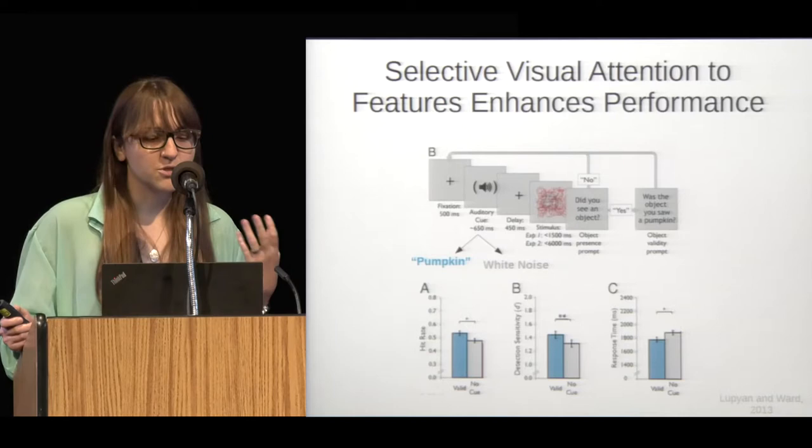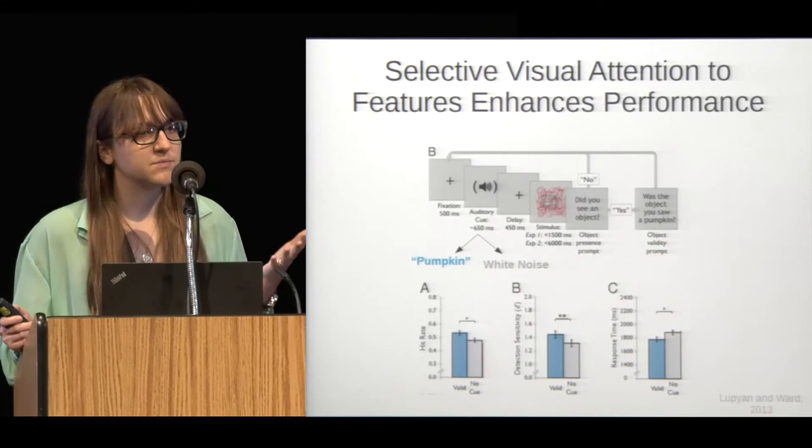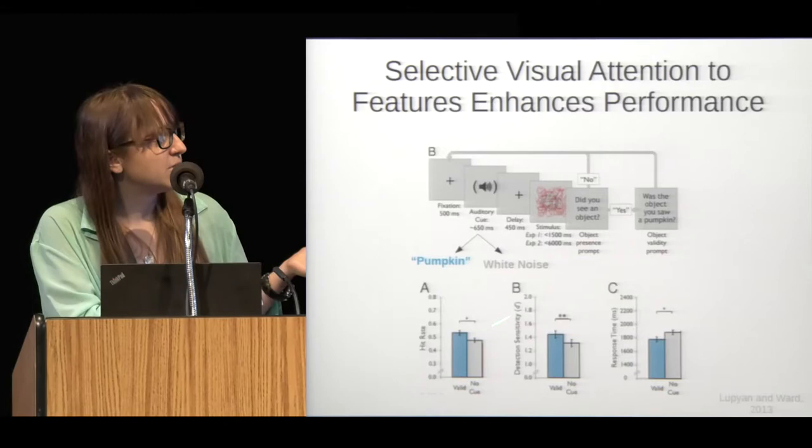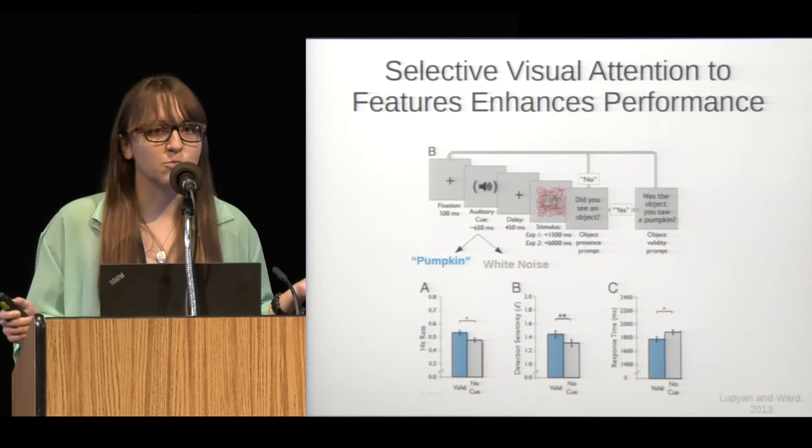In the trials that are cued, they're able to deploy attention to a particular object type, whereas on the white noise trials they're not able to deploy attention. Comparing performance in these two different types of trials can tell you the performance benefits that come with being able to deploy attention. At the bottom, you can see that performance is better in terms of hit rate, detection sensitivity, and reaction time when an attentional cue is given.